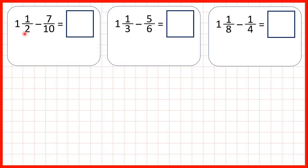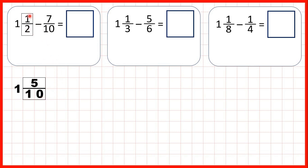So for this first question, we need to find a fraction equivalent to 1 half which has a denominator of 10. So instead of writing 1 and a half, we can write 1 and 5 tenths. That's equivalent because we use multiplication to find equivalent fractions: 2 times 5 is 10, and what we do to the denominator we do to the numerator as well, so 1 times 5 is 5.